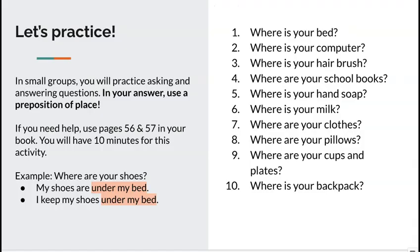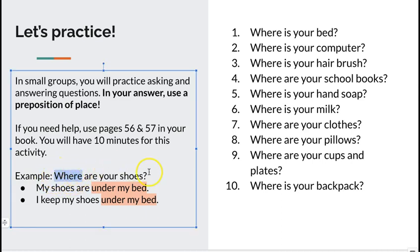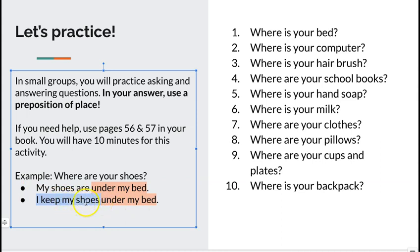Let's do a little practice. When we want to know the location of something, we ask questions with 'where.' When a question starts with 'where,' the answer is a location. For example: 'Where are your shoes?' You can use sentence structure one — 'My shoes are...' subject, linking verb, and then a prepositional phrase. Or you can use sentence structure two — 'I keep my shoes under my bed' — subject, transitive verb, direct object, prepositional phrase. So when we ask 'where,' you want to give the location.